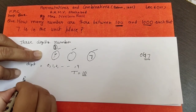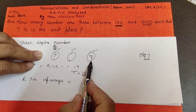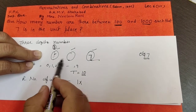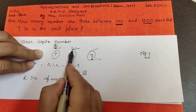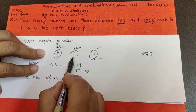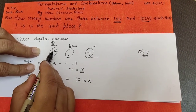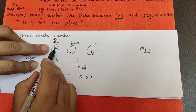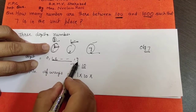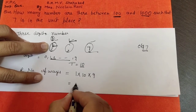The units position is filled in one way — only 7. The tens position can be filled with digits 0 through 9, giving 10 ways. The hundreds position cannot have 0, so digits 1 through 9 are allowed, giving 9 ways. Therefore, the required answer = 9 × 10 × 1 = 90.